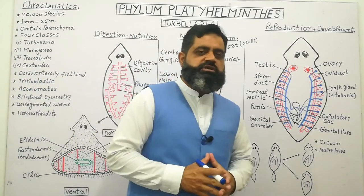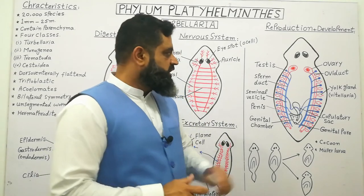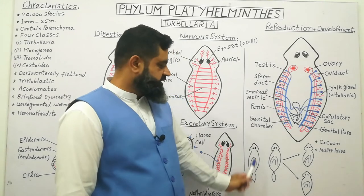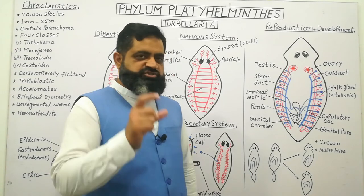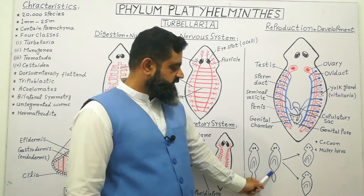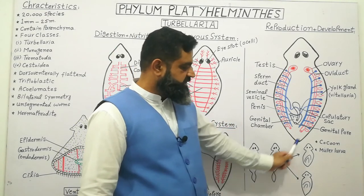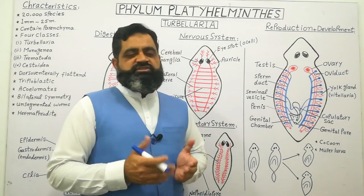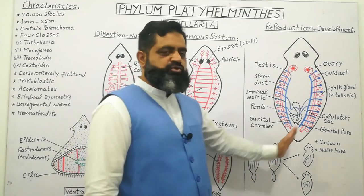Now we are going to discuss the reproductive system of turbellarians. These animals reproduce both asexually and sexually. In asexual reproduction, they divide by binary fission. A constriction ring is formed in the middle of the animal, which increases until the animal divides into two. Each part then develops new organ systems inside its body. In this way, through binary fission, one animal divides into two.